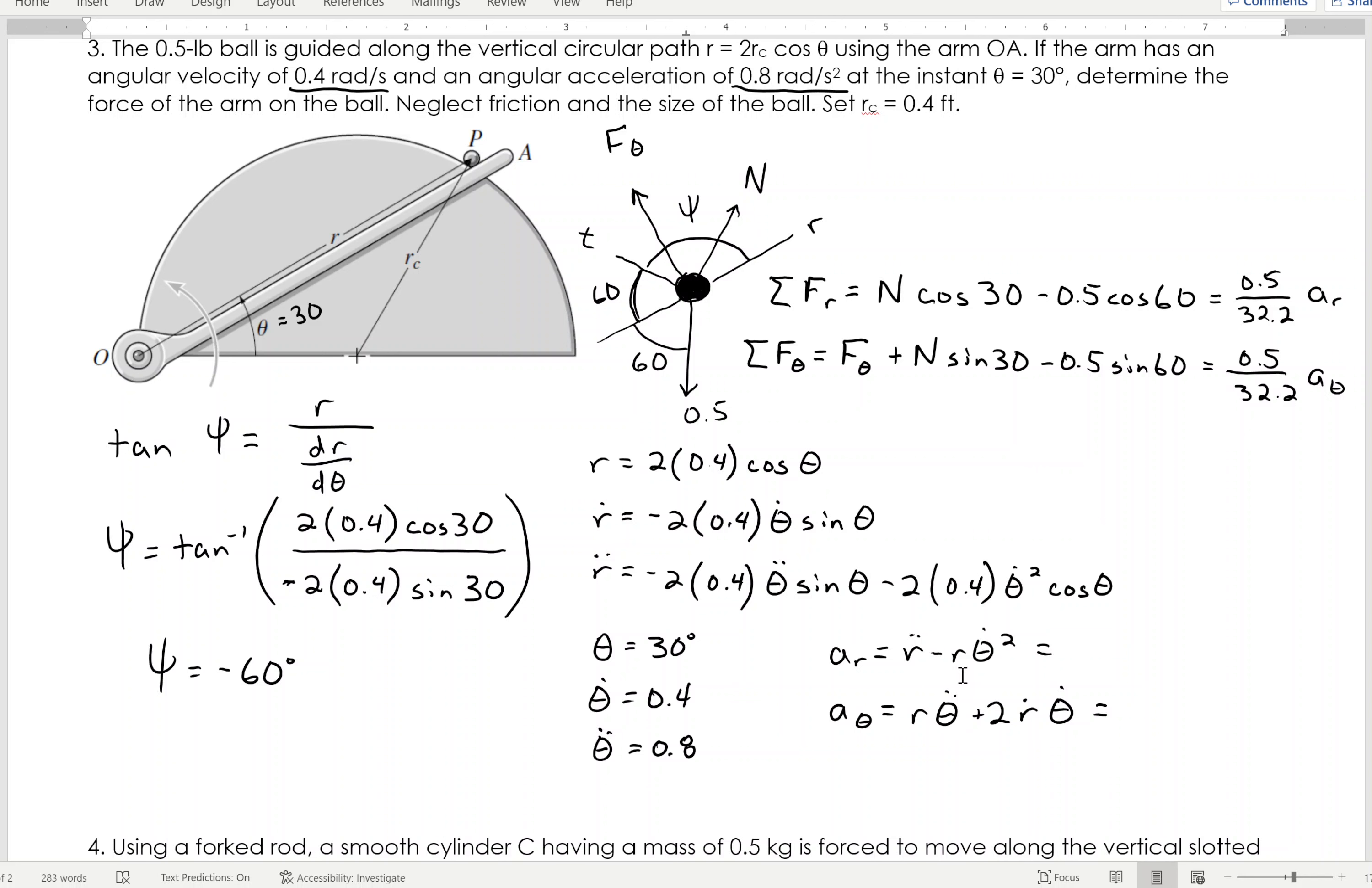From that, I can find that the accelerations are, well, before I find the AR and A theta, I need to go through and calculate R, R dot, R double dot, and when I do that, I get R is 0.693, plugging in what I know about theta, theta dot, theta double dot, I know R dot is negative 0.16, and I know R double dot is negative 0.43, so from that, I can then plug in these values and find AR and A theta.